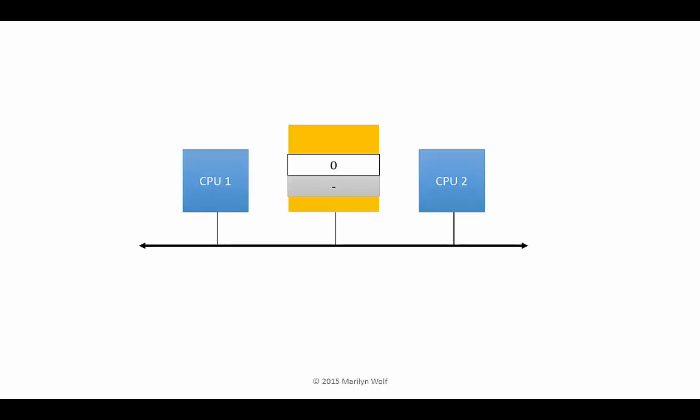Here's a simple example. Two CPUs use shared memory to communicate. The top location is a flag that tells each CPU whether it can write into the location; the bottom location is where the value is stored. CPU1 reads the flag, sees it's a zero, and decides it can write to the location. Then CPU2 reads the flag and also decides it can write to the location.